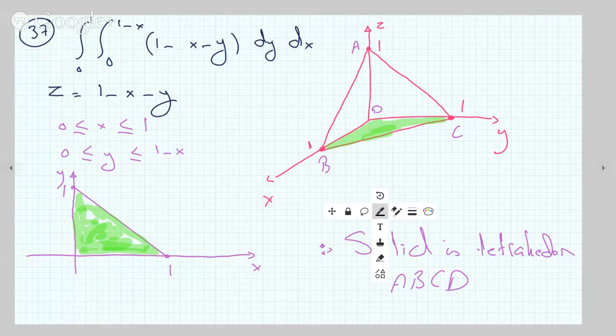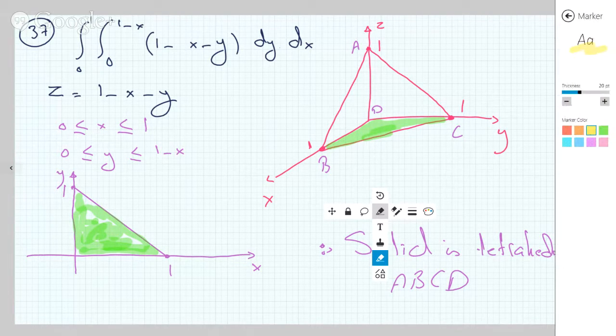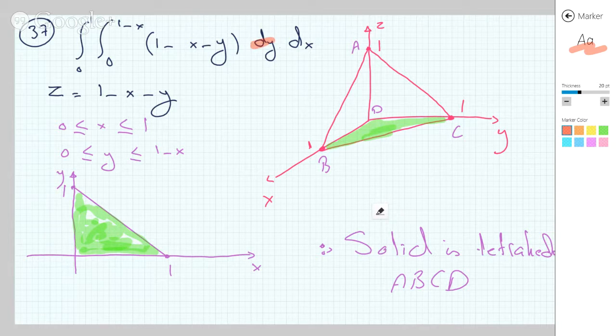So I'll just use a highlighter to show things as I'm going through it. So the y bounds are these here, from 0 to 1 minus x, and the outer bounds are 0 to 1. So if I draw these, y equals 1 minus x is this line right here, and 0 to 1 on the x-axis.